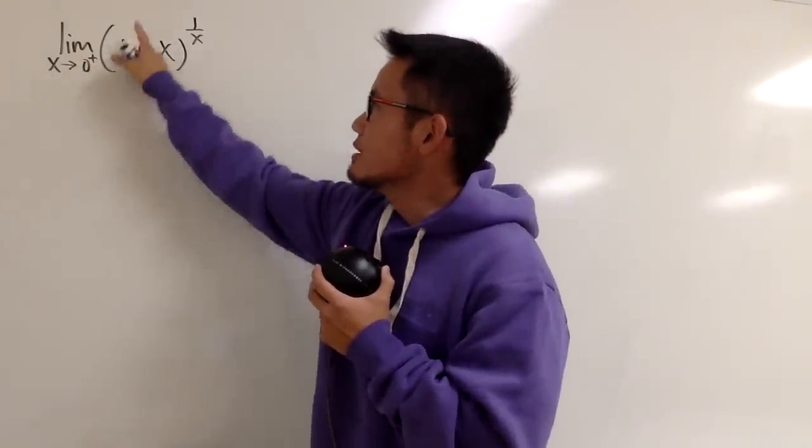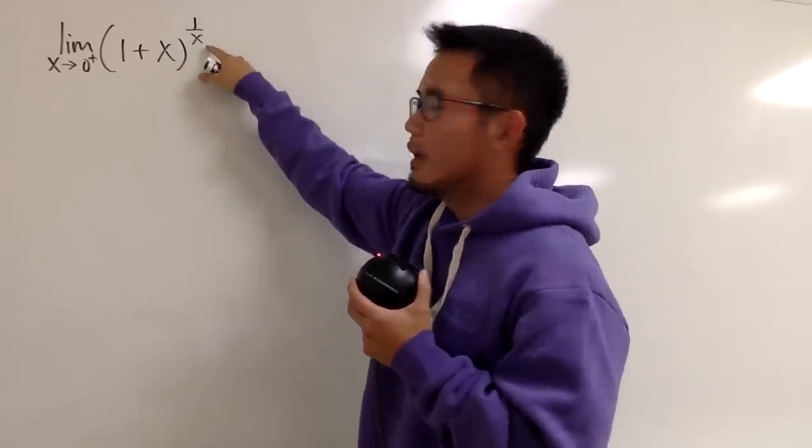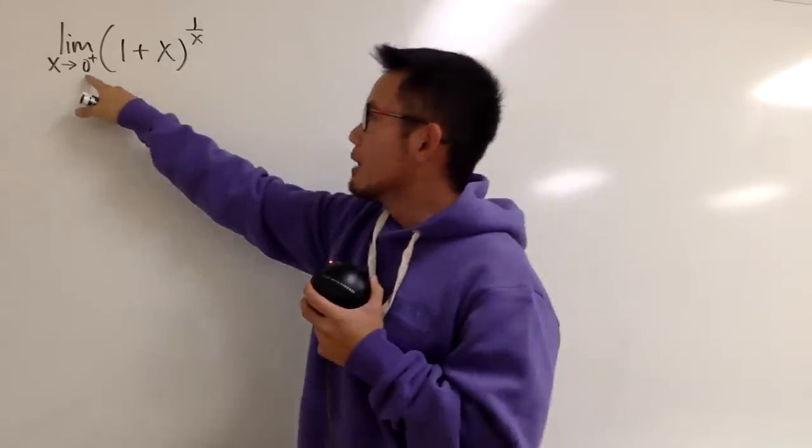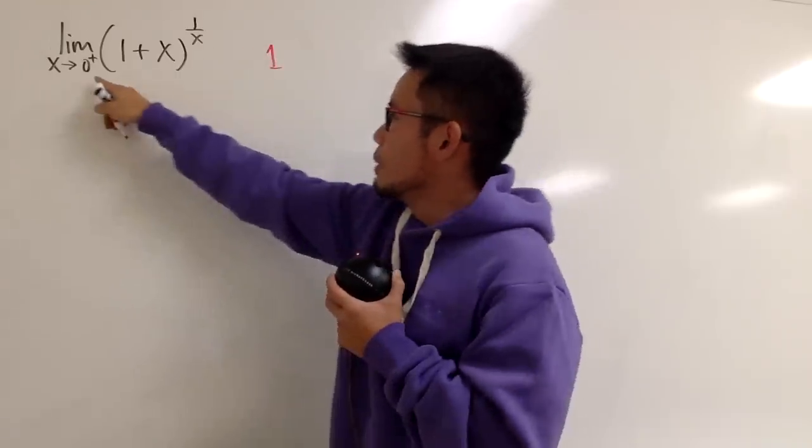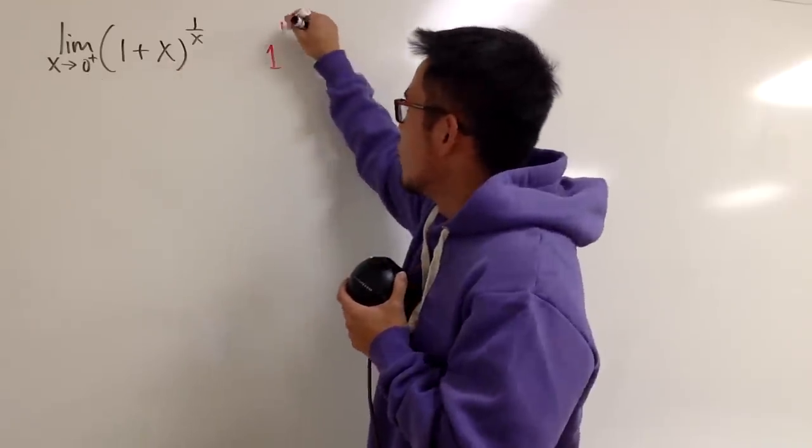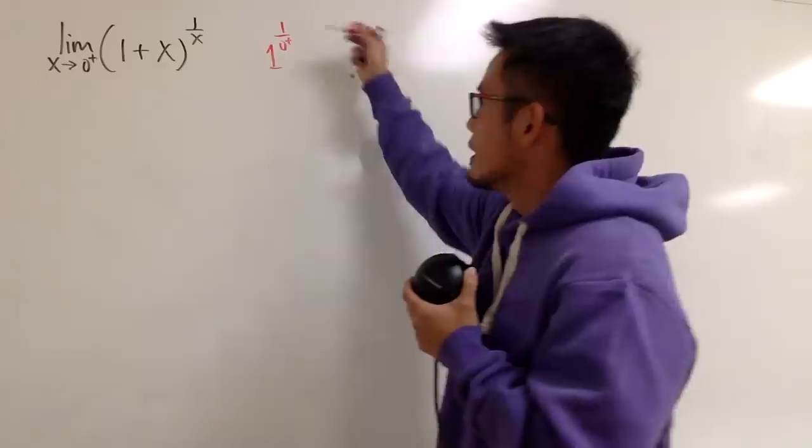The limit as x goes to 0 plus of (1+x) inside, and then raised to the 1 over x power. When we plug in 0 plus into here, you see the base is 1. And when we plug in 0 plus into here, we have 1 over 0 plus. And we know 1 over 0 plus, that goes to infinity.